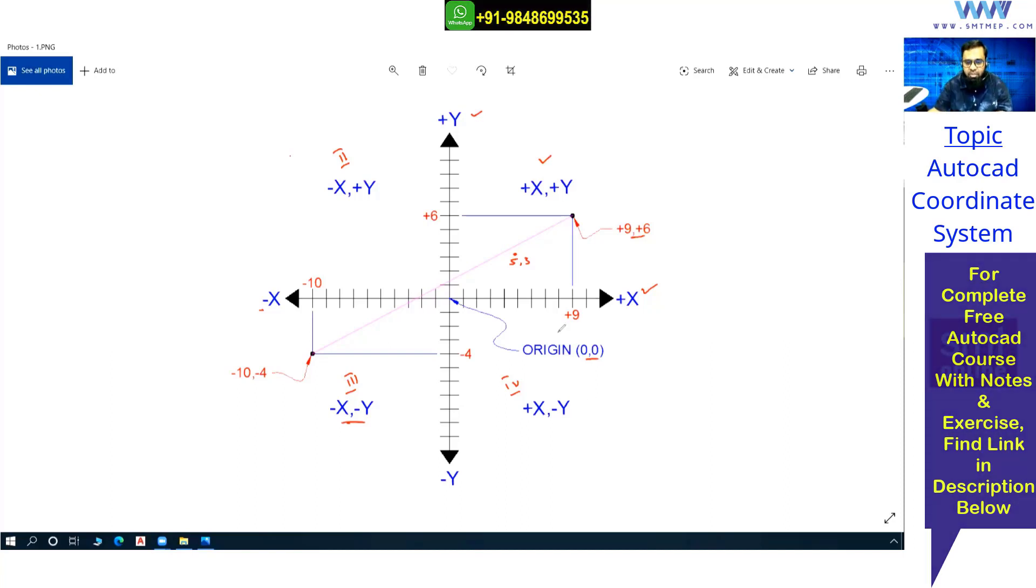Remember, this information will be used when working with the absolute method for lines. We can use X and Y positive in the first quadrant, X negative and Y positive in the second quadrant, etc. in the absolute coordinate method for drawing lines.